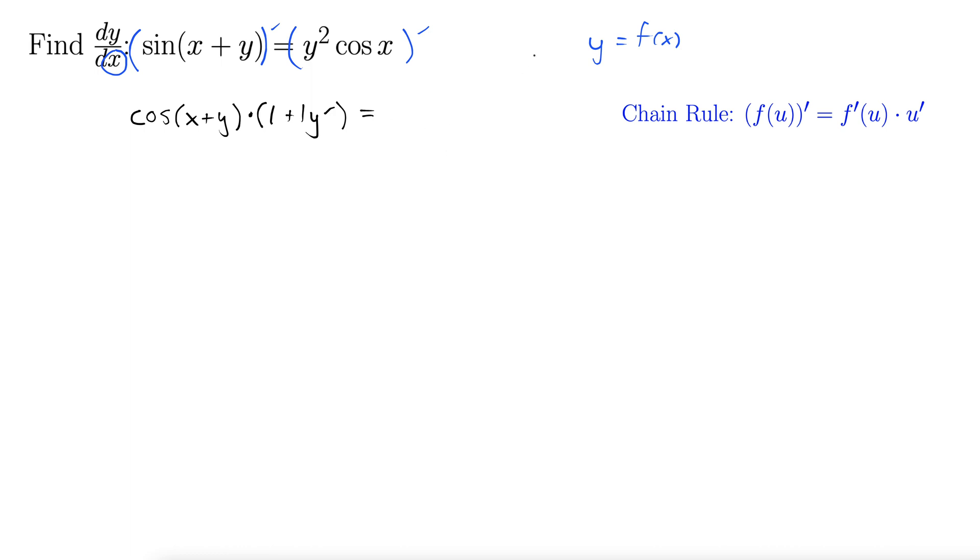Now we have equals. Now on the right side we're gonna need the product rule, which tells us f g prime is f prime g plus g prime f. In this example we can treat y squared as f and cos x as g.